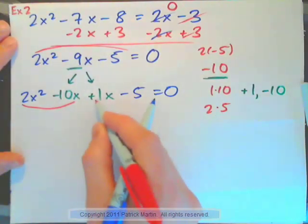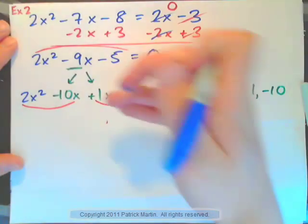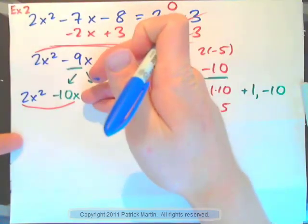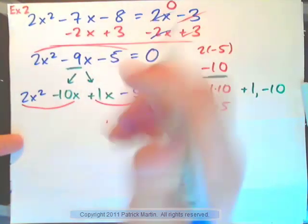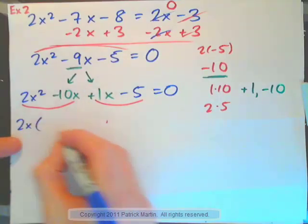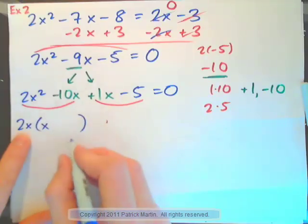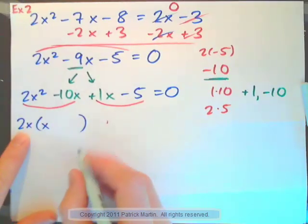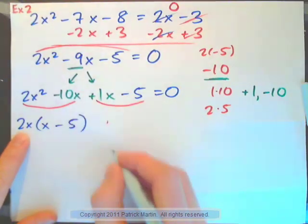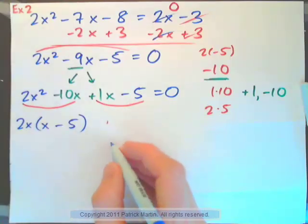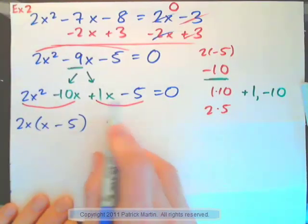And of course, you know that you could also have written it 2x squared plus 1x minus 10x minus 5 equals 0. Either way would be correct. Now, we can factorize it by grouping. Factor these two terms, then these two terms. So, if I factor these two terms, I'll pull out a 2x. 2x times x gives 2x squared. 2x times negative 5 would give 10x. Negative 10x.